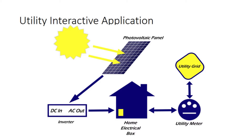Since PV systems are restricted to functioning only when exposed to the sun, a backup system is frequently required to ensure continuous supply of electricity, irrespective of the weather conditions. These systems are most commonly used in houses or commercial buildings to offset electricity costs. A well-designed PV system with a proper storage facility can be an attractive prospect for displacing power during peak hours.